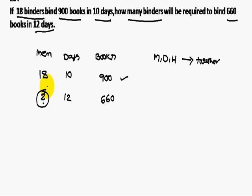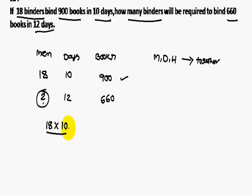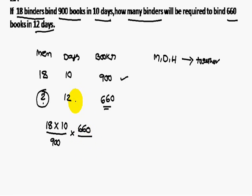For the first statement, write men = 18; since men is written, automatically write days = 10 as well. There are no hours, so books (900) go in the denominator. For the second statement, 660 books go in the numerator, and days (12) go in the denominator along with the second statement's men/days values.